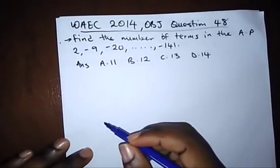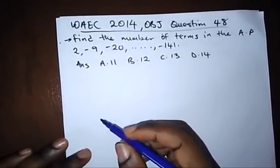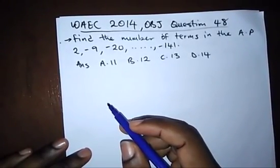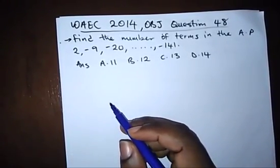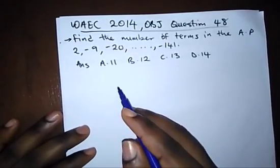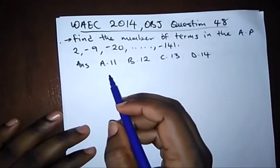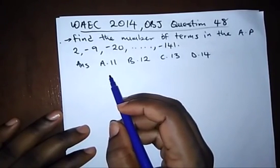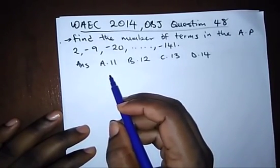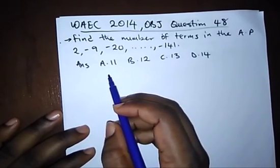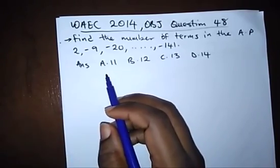Hello viewers, welcome to Destined to Win Tutorials. Please like, subscribe, and share this video. Today we're treating arithmetic progression. We have a question from WAEC 2014 objective, which says: find the number of terms in the AP 2, -9, -20, and our last term is -141.